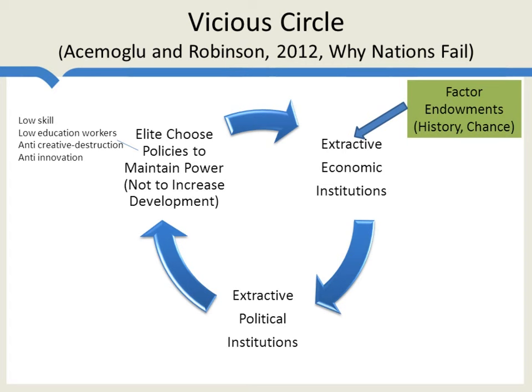This further supports these extractive economic institutions, which support the extractive political institutions, and so forth. We started the story with factor endowments, but in different parts of the world, at different times in history, we could equally well have started with differences in history or even with random chance events. The point is that small factors, once they start you going on this circle, make the circle very difficult to break out of. That's why it's a vicious circle — it can take hundreds of years, once this circle has begun and these institutions have been put in place, to break out of it, even when breaking out would ultimately be to the great benefit of the mass of the population.